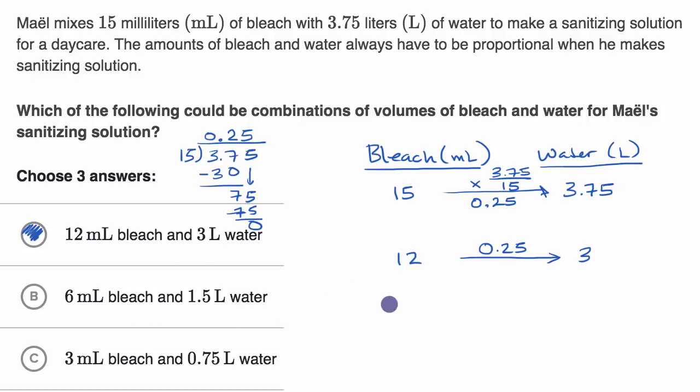What about going from 6 to 1.5? Are we multiplying by 0.25? Yeah, 1.5 is 1 fourth of 6. Or another way to think about it is, what is 6 times 25? It is 150. So 6 times 25 hundredths would be 150 hundredths, which is the same thing as 1.5. So this one works.